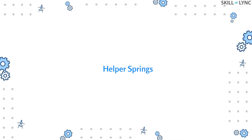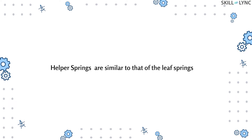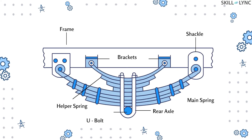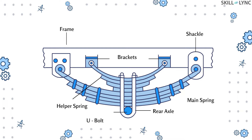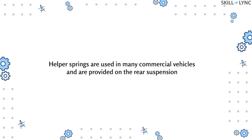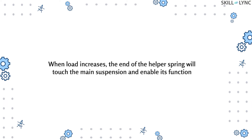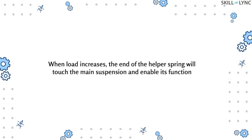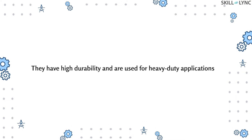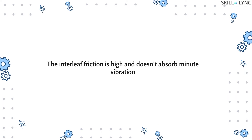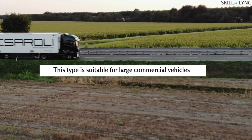The next type of steel spring is the helper spring. These are similar to leaf springs except that they are mounted above the main spring. They are arranged so that only when the load is high do the helper springs actuate; otherwise only the main spring operates. Helper springs are used in many commercial vehicles on the rear suspension. As the load increases, the end of the helper spring touches the main suspension and enables its function. Since interleaf friction is high, they don't absorb minute vibrations, making them suitable for large commercial vehicles carrying heavy loads.